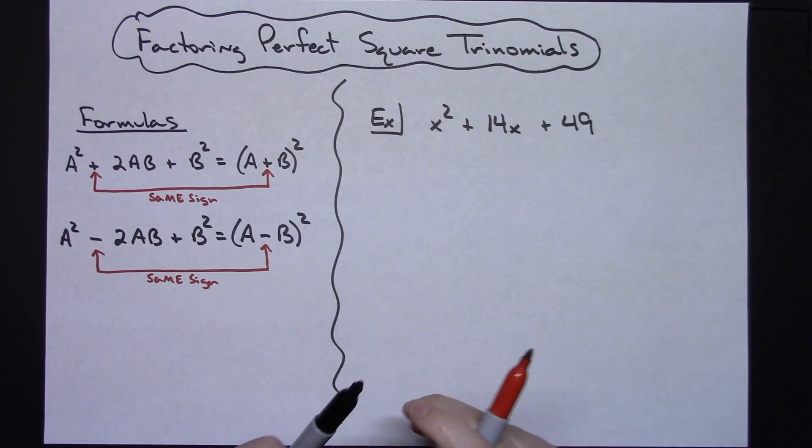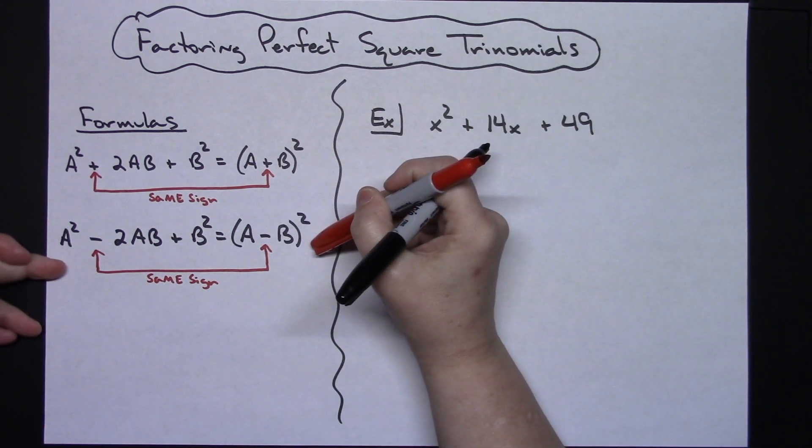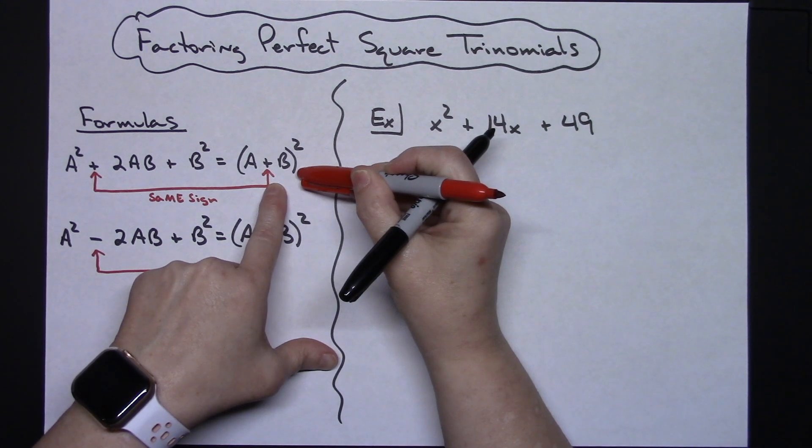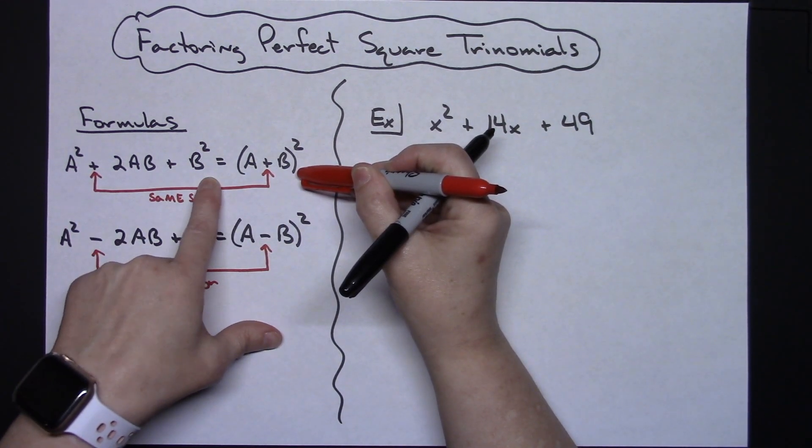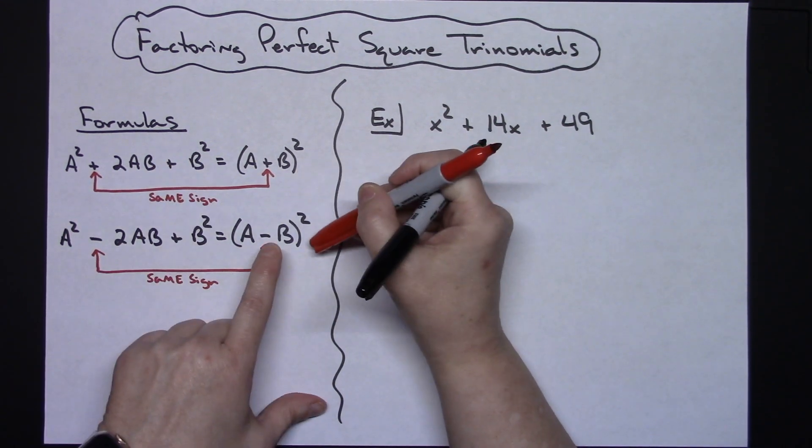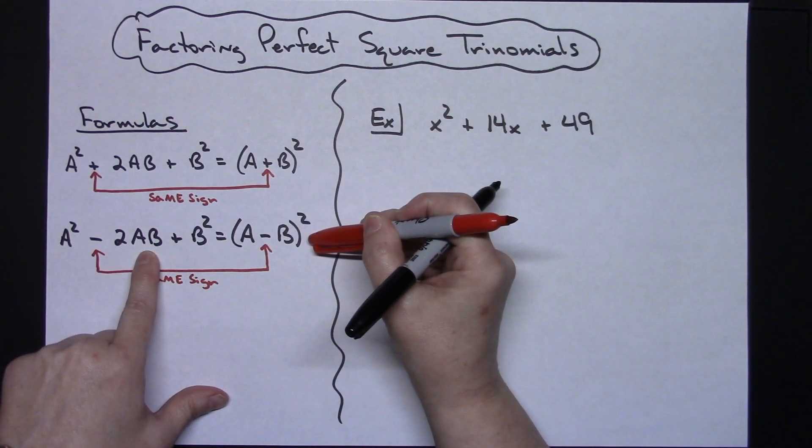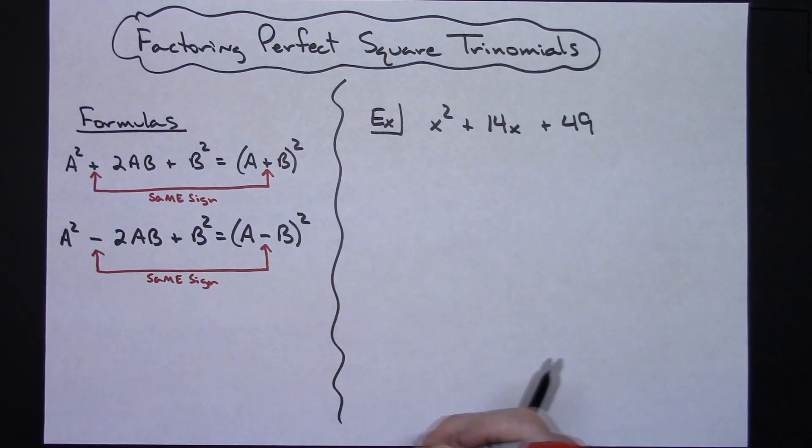In this video we're going to take a look at factoring perfect square trinomials. This is based on using some of the formulas that you learned when you were multiplying polynomials out. You learned that (a + b)² could be multiplied out to be a² + 2ab + b². Same thing with when it was a minus: a² - 2ab + b². So we're just going to take these and work them backwards.